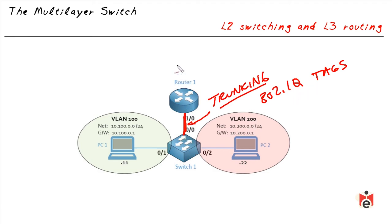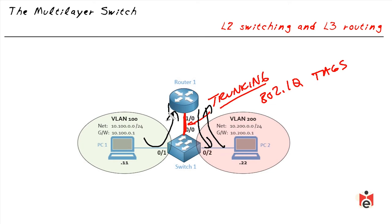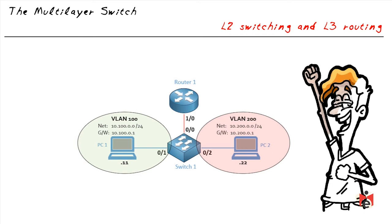A trunk using 802.1Q tags can support hundreds of VLANs. When a frame comes from VLAN 200, the switch marks it with an 802.1Q tag, and the router uses logical interfaces — one for VLAN 200, one for VLAN 100 — to receive and send packets between those networks. If PC1 is pinging PC2, traffic goes up to the router, which makes a forwarding decision and sends it down to the 10.200 network, using far fewer interfaces.